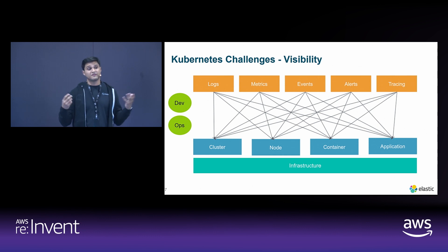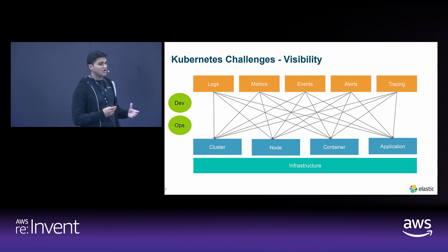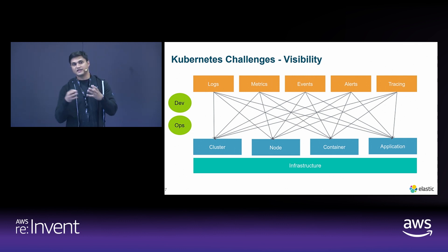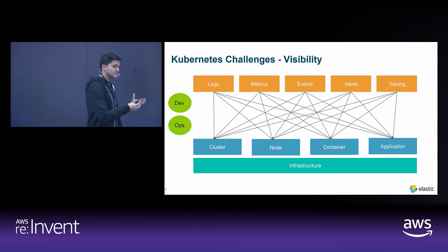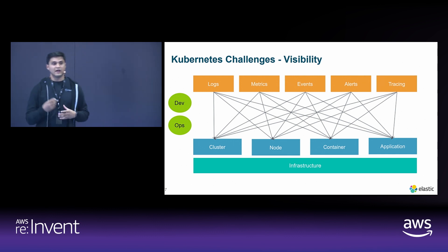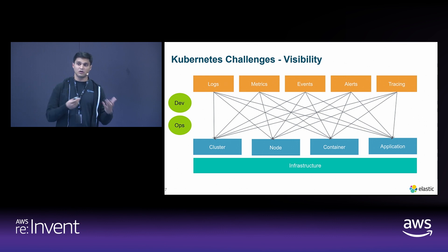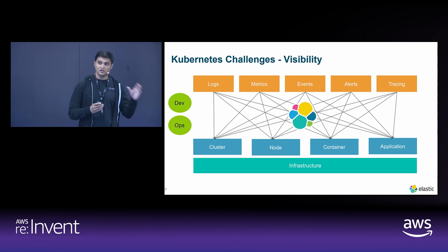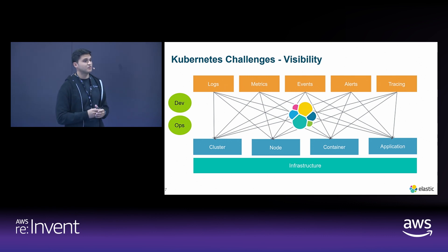From a visibility perspective, all the data coming out of Kubernetes — whether logs, metrics, events, alerts, or tracing — flows through the infrastructure layer, whether that's EC2 or your containers. How does that influence the nodes, the container runtime? You also have different stakeholders: developers and operations teams after different aspects of visibility, needing to correlate and visualize different pieces. That's really where Elastic comes in and helps with that trifecta of logs, metrics, and application performance monitoring.